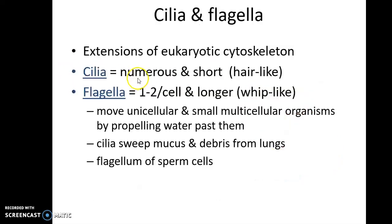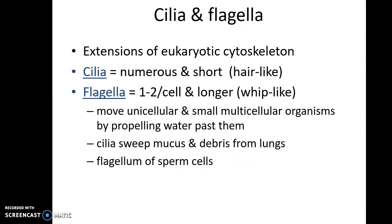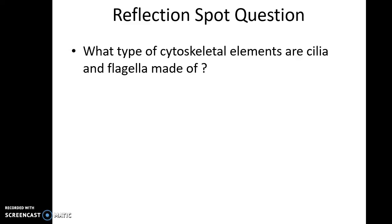Cilia and flagella are extensions of the eukaryotic cytoskeleton. Cilia are many in number and are short hair-like structures, whereas flagella are one or two per cell and are longer whip-like structures. They help in movement, seen in most unicellular and some multicellular organisms, wherein they move by propelling water. Cilia are known to sweep mucus and debris from the lungs, and flagella are found in sperm cells where they aid in motility.